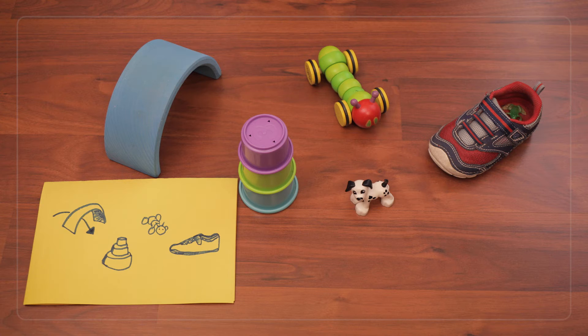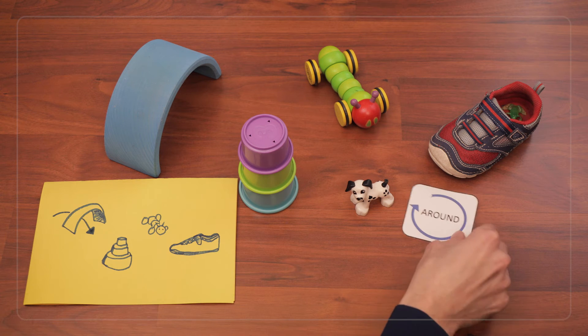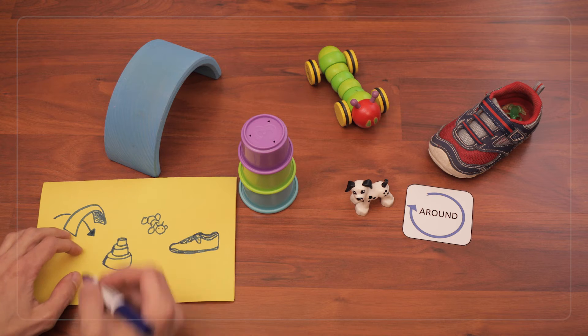Then at the second item, the stack of cups, I remember that we went around. So we'll draw a curved arrow like this to show around.